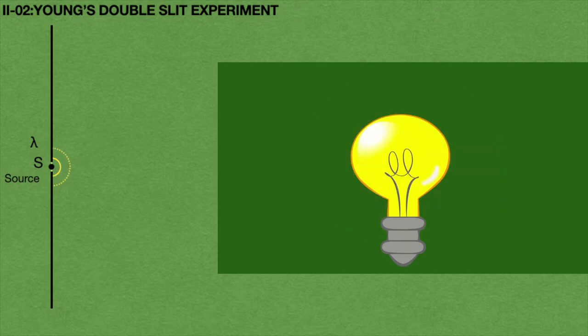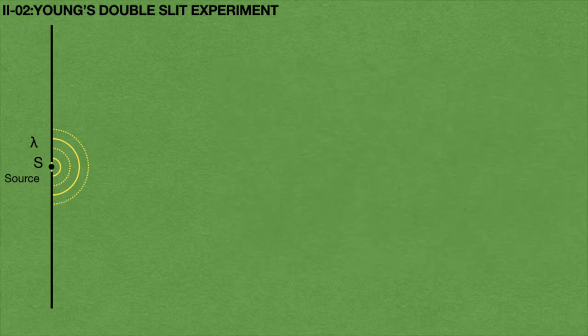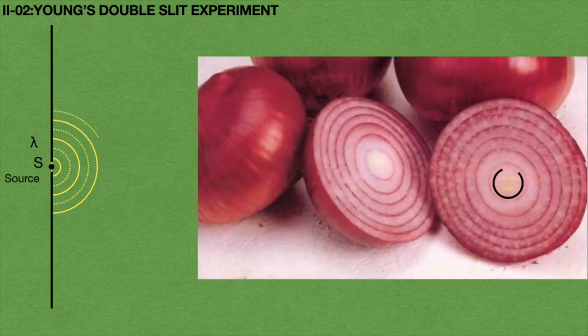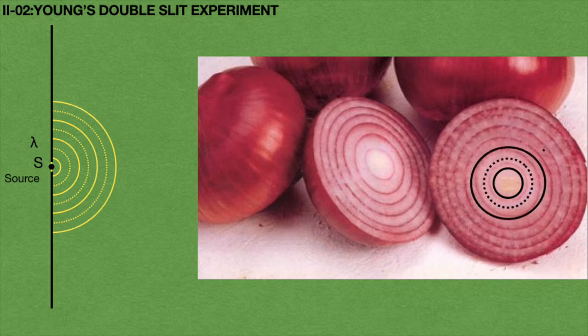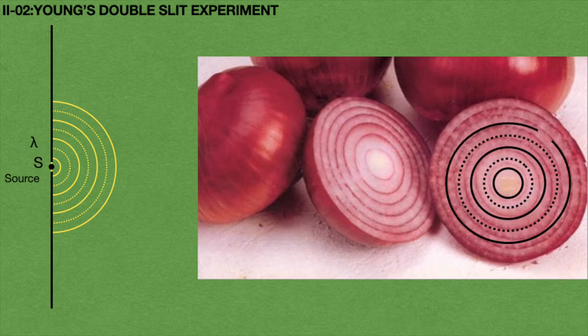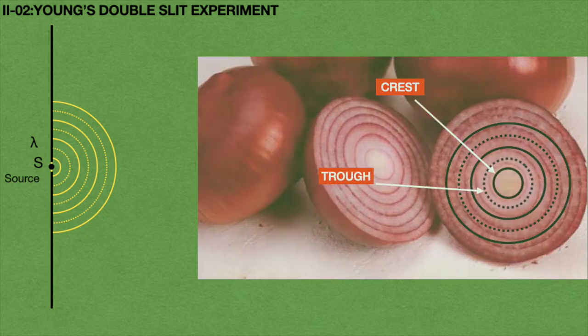According to Huygens' principle, light waves are coming in all directions from the source. This seems to be like spherical layers increasing — like an onion. In these layers, one will be a crest and another will be a trough. We can consider the onion layers where one layer is a crest and the next successive layer is a trough. Here I am assuming the source in green color.